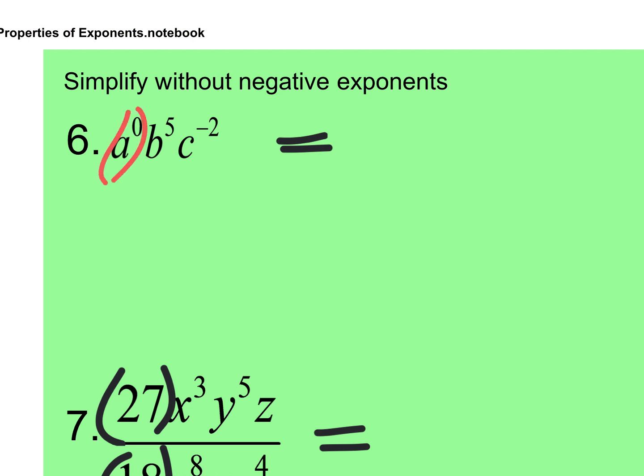That part's one. And do I have to write the one? No. One B to the fifth is the same as B to the fifth. And I can't leave that C as a negative exponent. So you create a fraction and you put the C down there where it's going to be happy and not negative. Raise your hand if you had that one right. Okay, good.